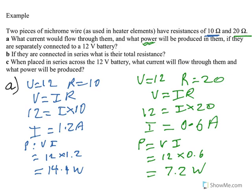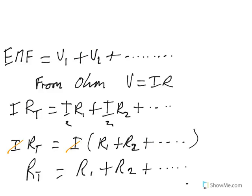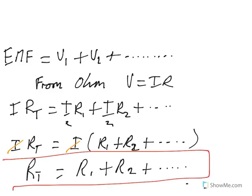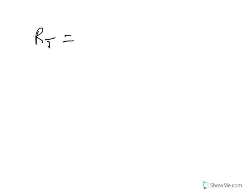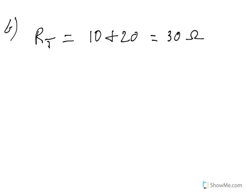Part B: if they are connected in series, what is their total resistance? Using our series total resistance formula, we add the two resistances: R_total = 10 + 20 = 30 ohms. That's Part B.